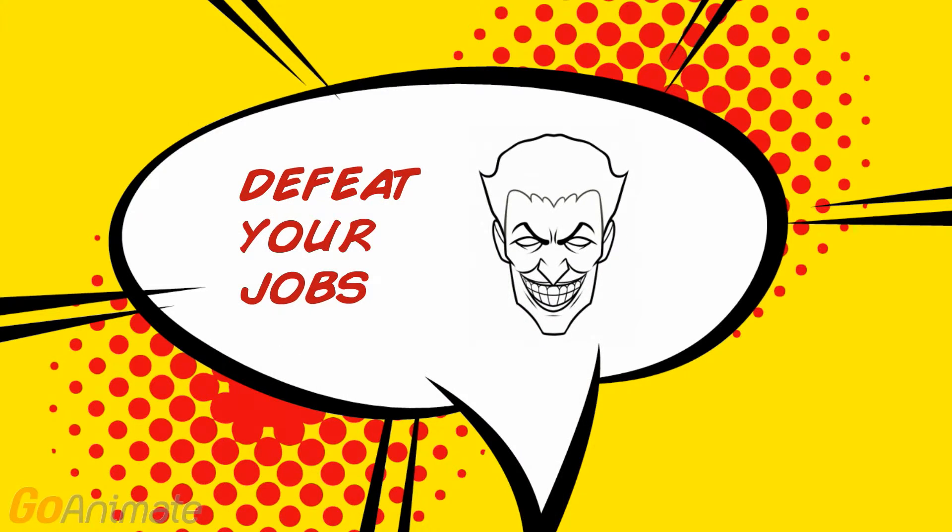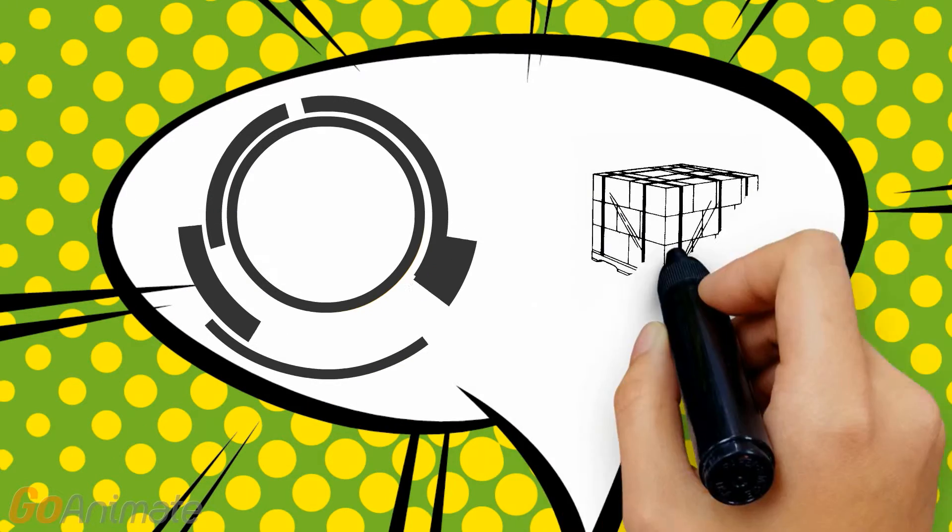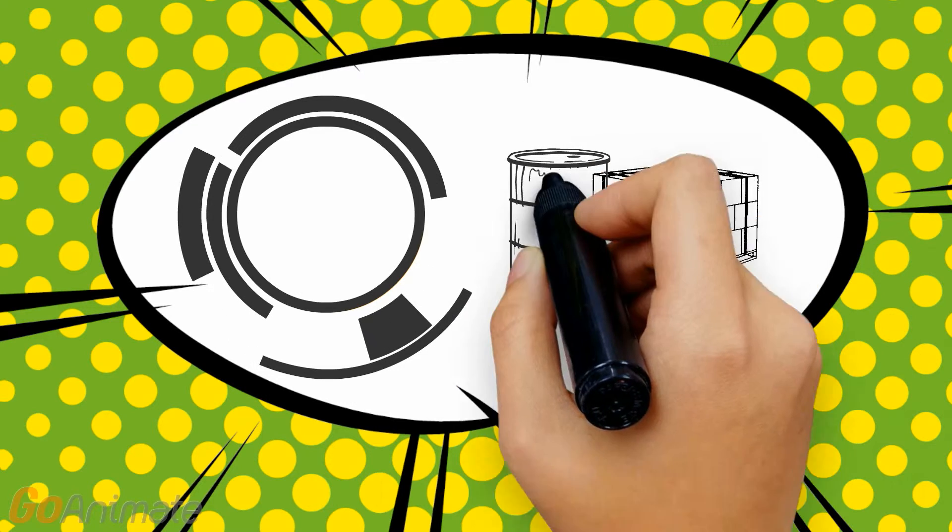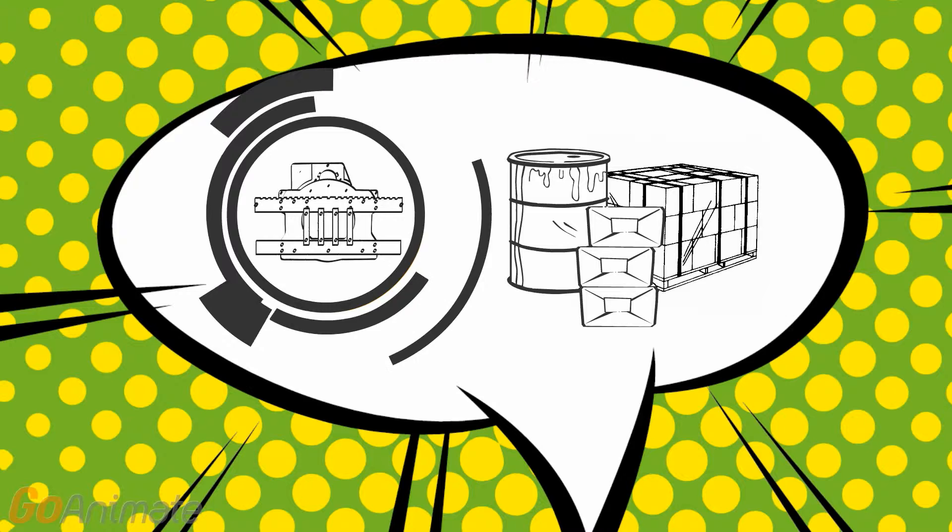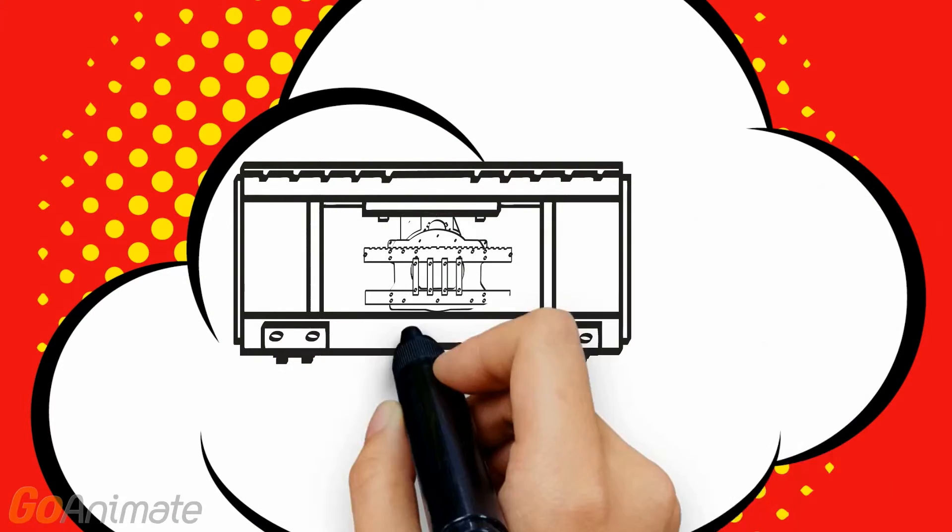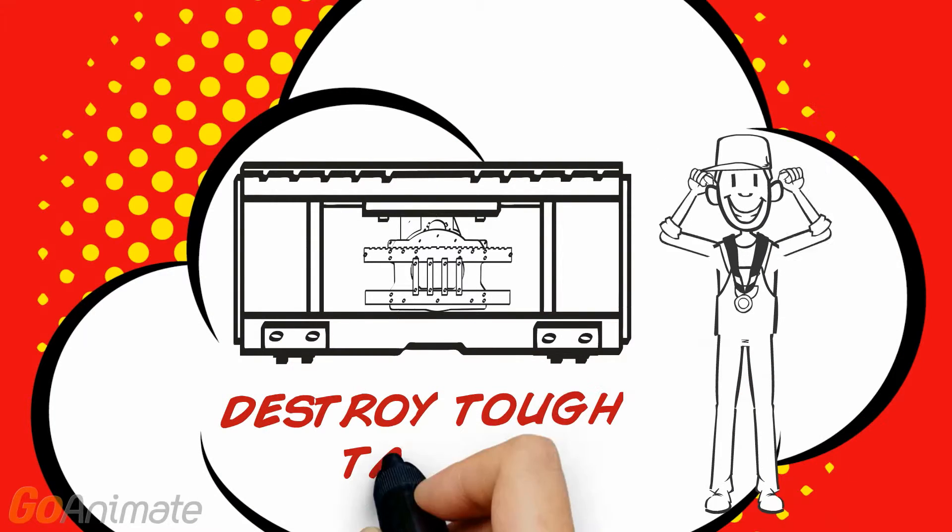Defeat villainous jobs by rotating a load of pallet containers, boxes, racks, drums, or just the forks in either direction with the rotator attachment. Available with or without side shifter, this attachment destroys tough tasks.